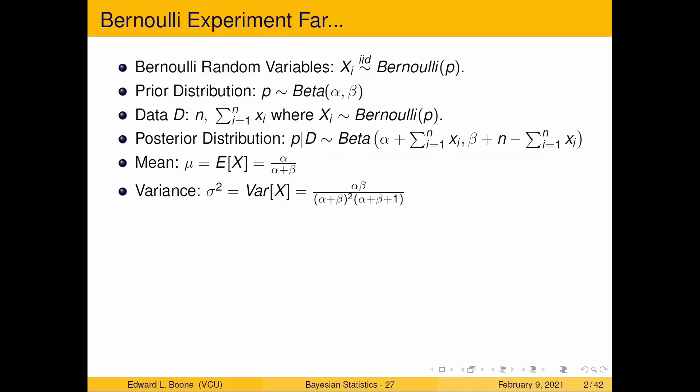Welcome to Choosing Prior Parameters for the Beta Distribution. We've been talking about this Bernoulli experiment for a while now, and we've found that the beta distribution seems to work well with this particular type of data, where Bernoulli is 0, 1 data, with the probability of success or probability of 1 equal to p.